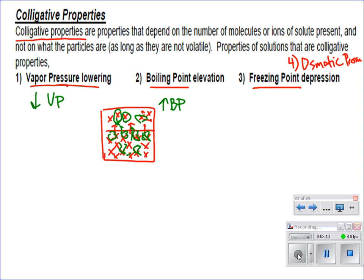Now what about freezing point? When stuff freezes, let's look at specifically water. What has to happen to these molecules when they freeze? Julian says they have to line up — that's correct. So if they're moving around and then they have to line up exactly in order to get these intermolecular forces attracted to each other, what's going to happen when I throw stuff in there? It gets in the way, so the molecules have to slow down even more, lose even more energy, to wiggle through and line up appropriately. So we get freezing point depression.